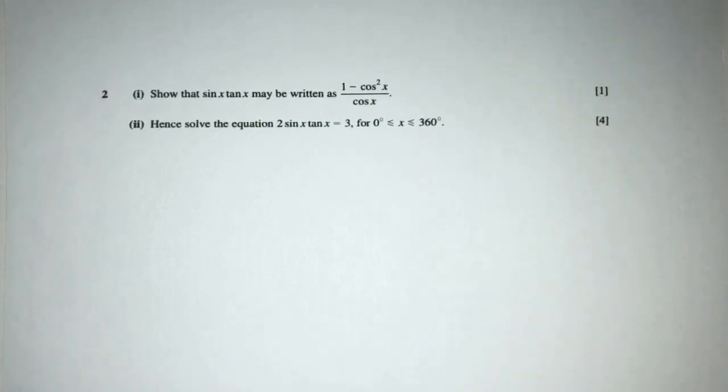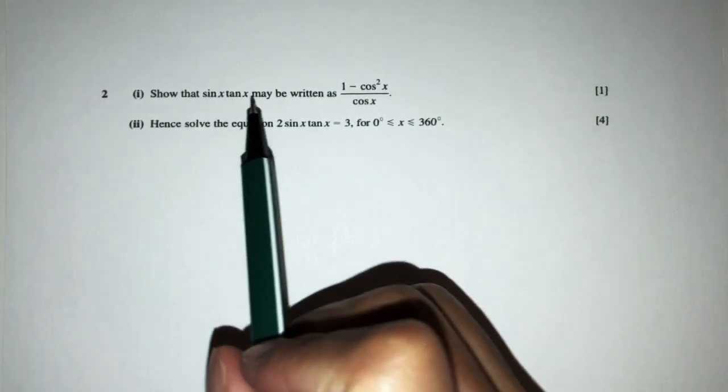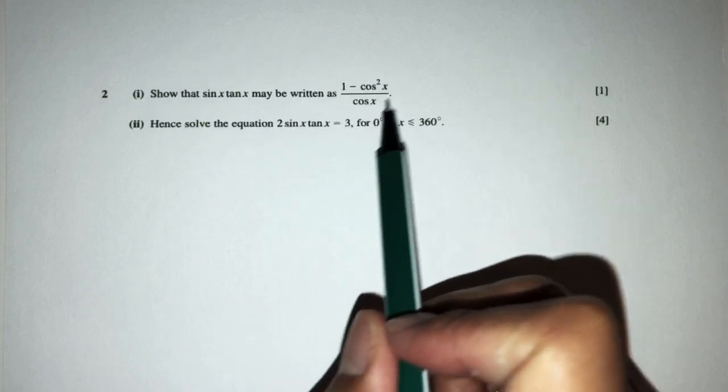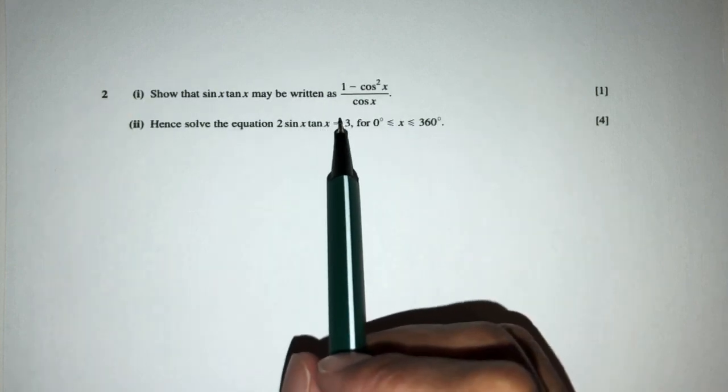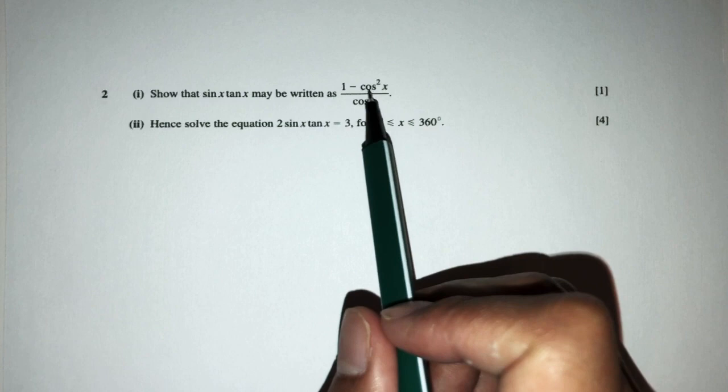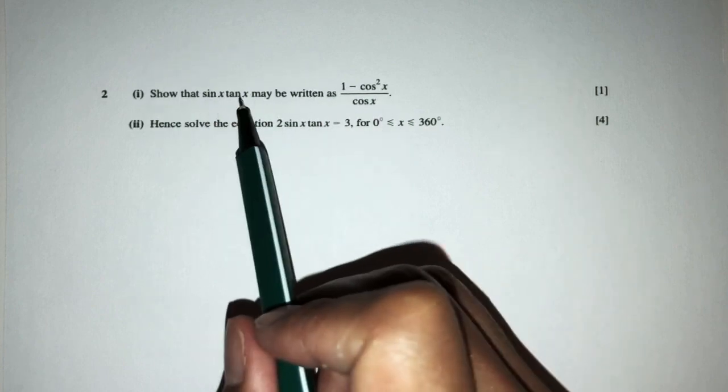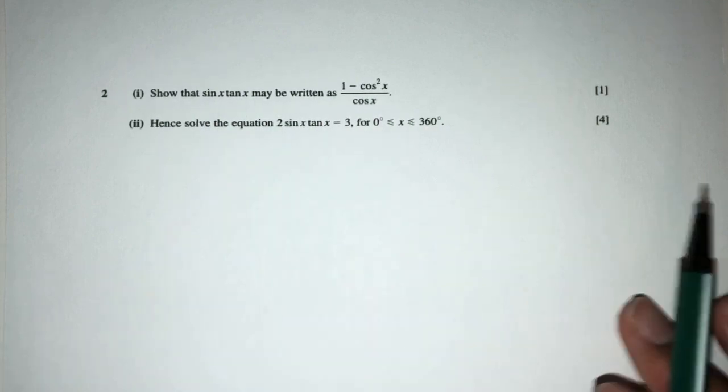So part one, we have to show that sine x tan x may be written in this form. Okay, so the first thing we can see is that in this form we only have cos. We don't have any sine or tan. So how can we do this? Let's think.